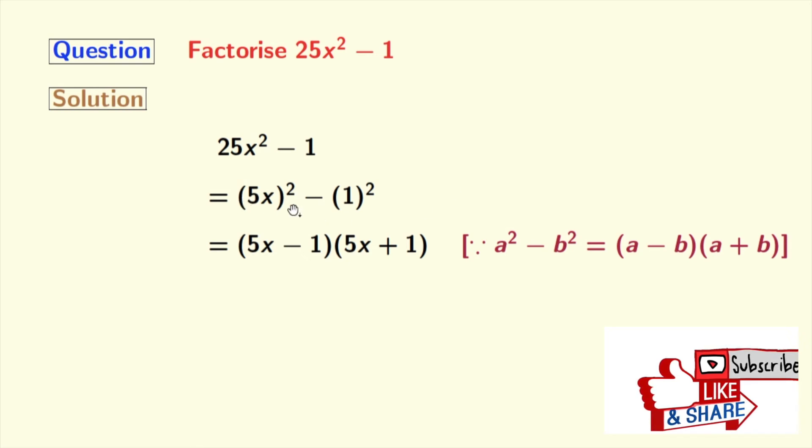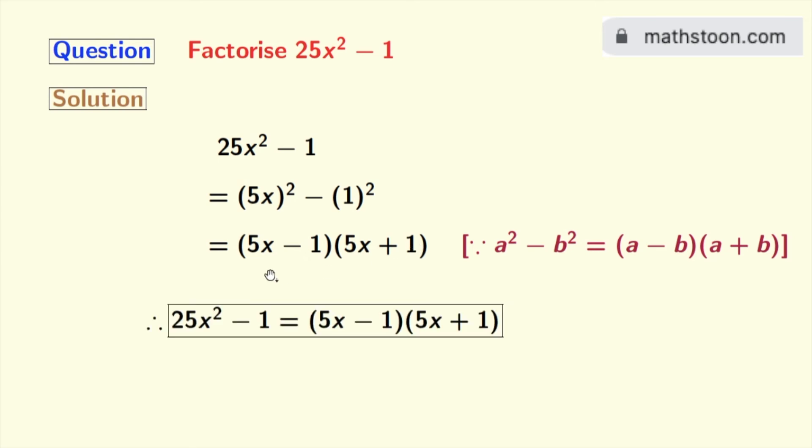Doing so, we get 5x minus 1 times 5x plus 1. So finally, we get 25x square minus 1 is equal to 5x minus 1 times 5x plus 1. This is our desired factorization.